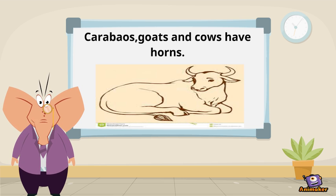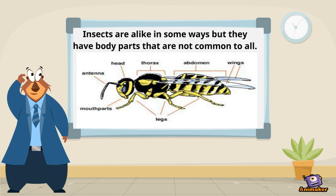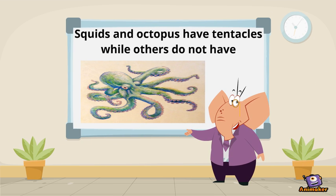Carabaos, goats, and cows have horns. Insects are alike in some ways, but they have body parts not common to all, like antennae and wings. Squid and octopus have tentacles, while others do not have.